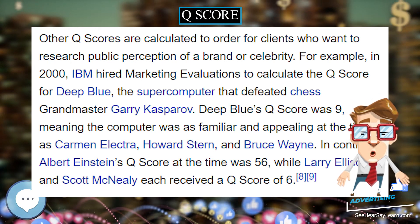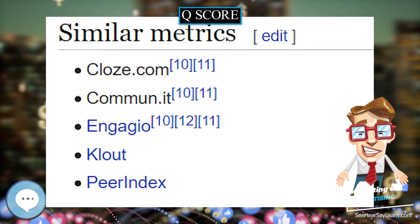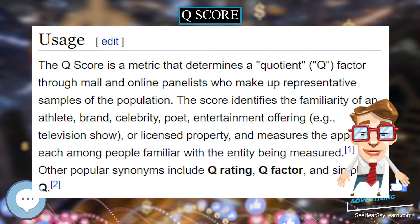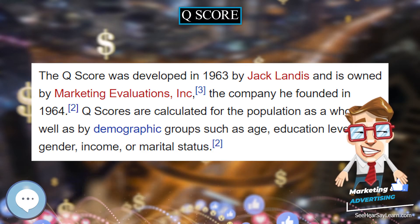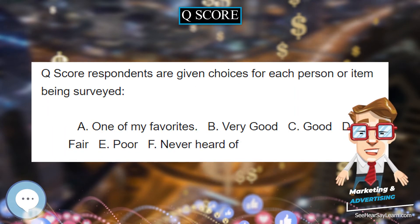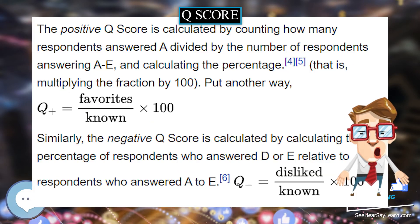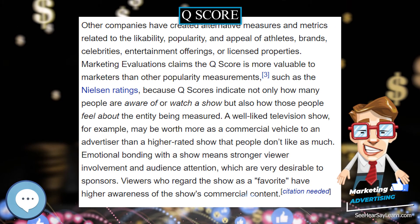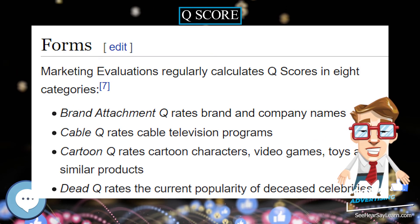Viewers who regard the show as a favorite have higher awareness of the show's commercial content. Marketing Evaluations regularly calculates Q-scores in eight categories. Cable Q and TV Q-scores are calculated for all regularly scheduled broadcast and cable shows. Other Q-scores are calculated to order for clients who want to research public perception of a brand or celebrity. For example, in 2000, IBM hired Marketing Evaluations to calculate the Q-score for Deep Blue, the supercomputer that defeated chess grandmaster Garry Kasparov.